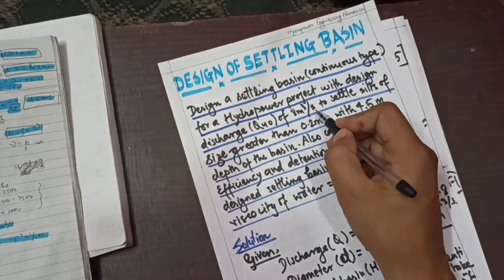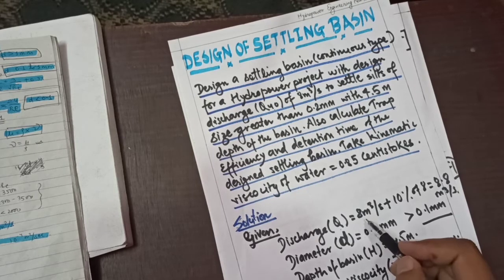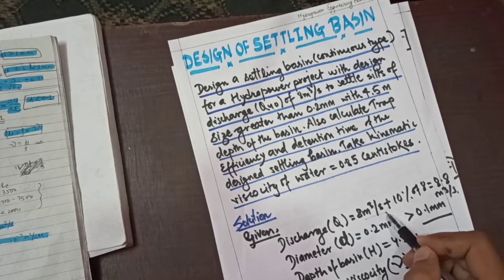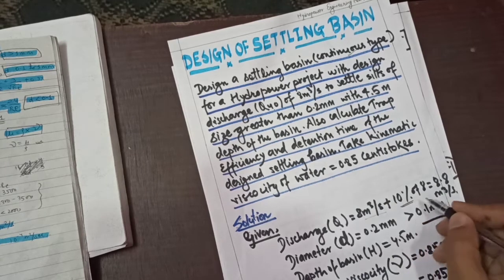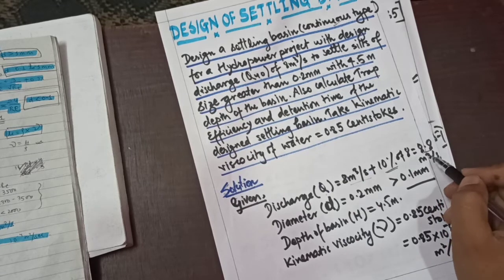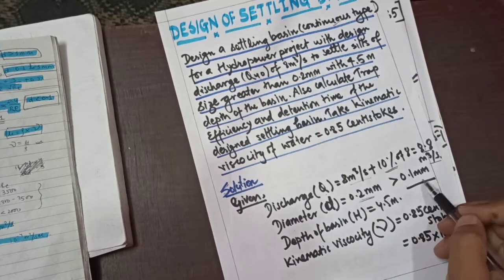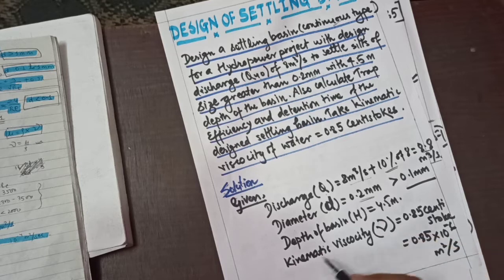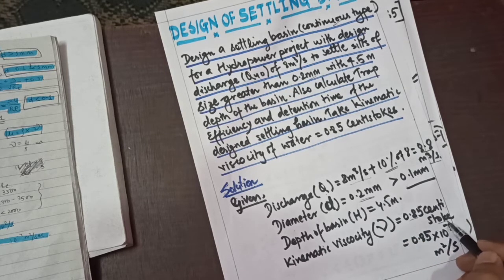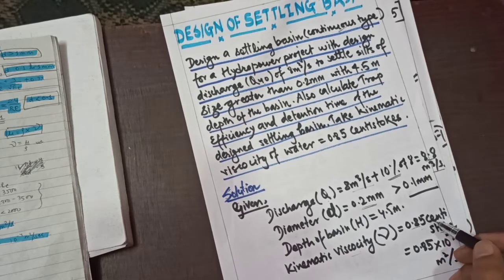Given: discharge Q40 is 8 meter cube per second, continuous type settling basin. With 10% added to it, the design discharge becomes 8.8 meter cube per second. Diameter is 0.2 mm, depth is 4.5 meters, and kinematic viscosity is 0.85 centi-stokes.